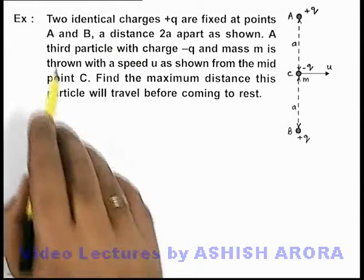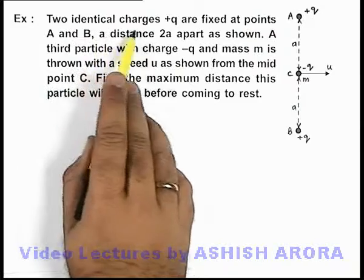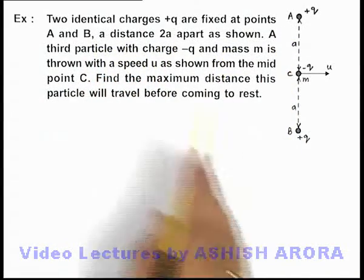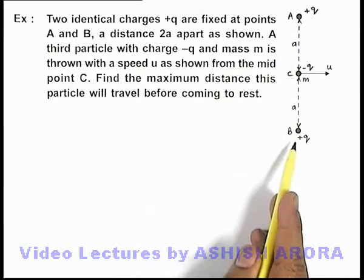In this example, we are given that two identical charges +q are fixed at points A and B, a distance 2a apart as we can see in the figure.